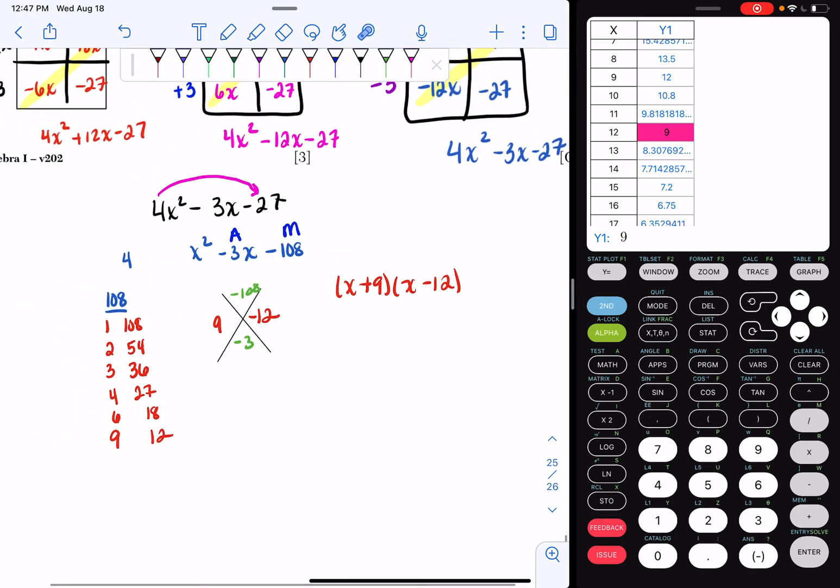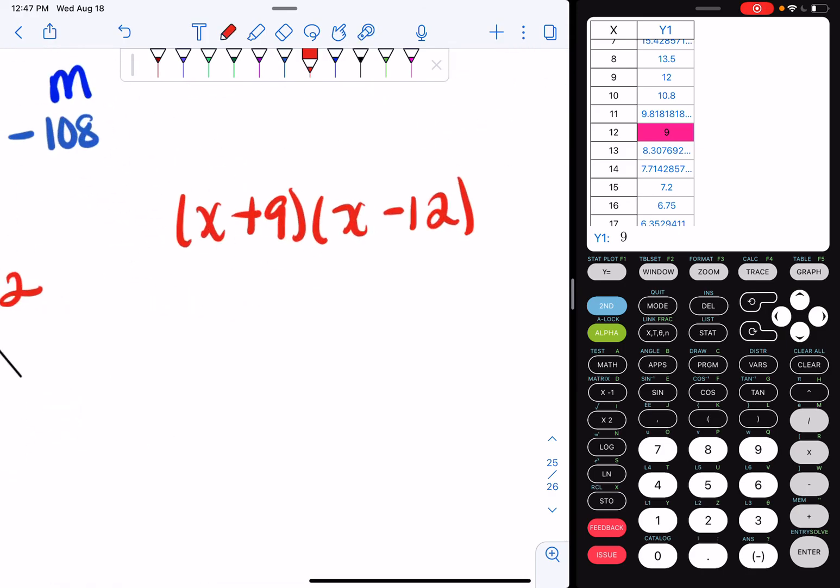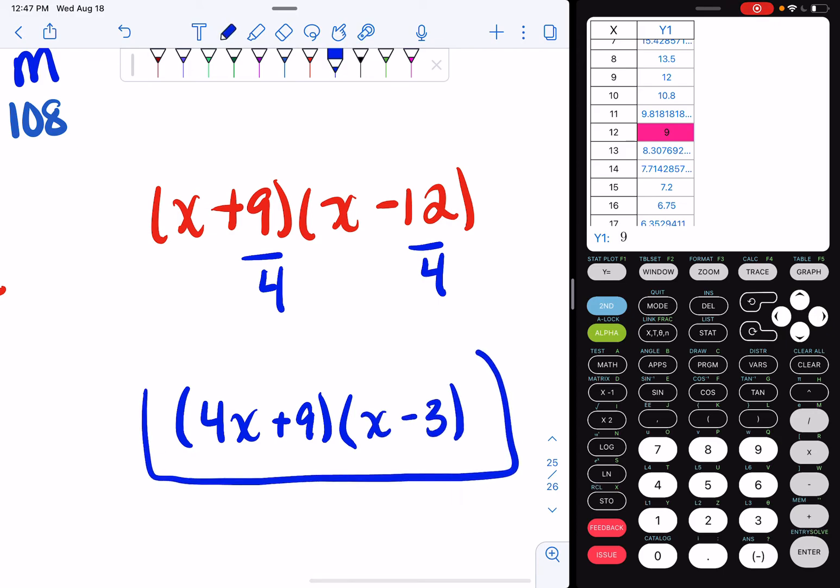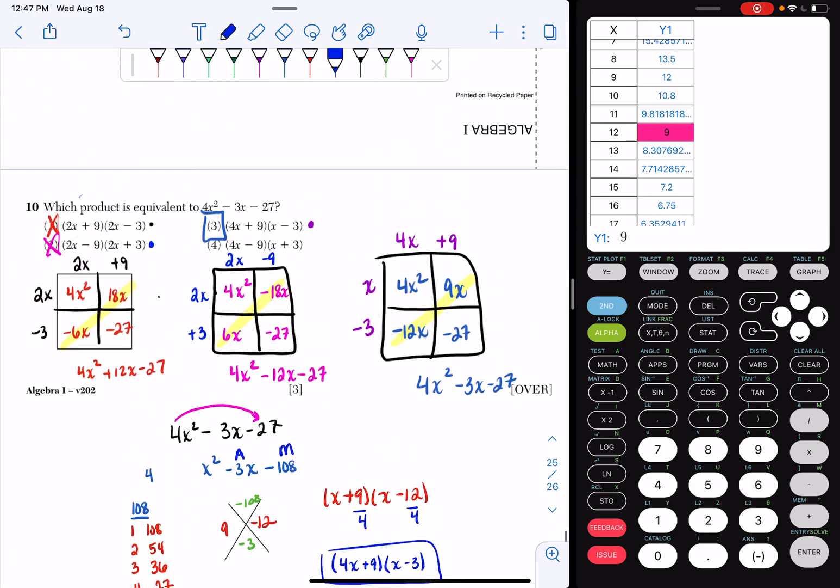Here's the issue. I took 4 out in the very beginning, so I had to bring that 4 back in. So this is where the divide comes in of slide divide. 9 over 4 doesn't reduce, so I just bring this 4 up with my x. So I have 4x plus 9. 12 divided by 4 is 3. So I have this as x minus 3. And if I look, that is choice 3.